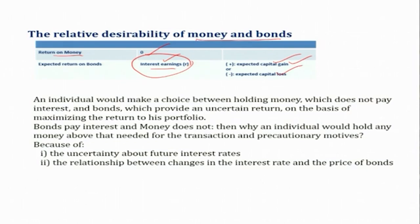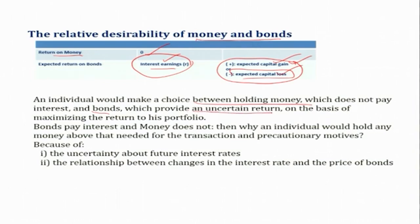In contrast, if the rate of interest increases in the future, there will be a decline in bond price and consequently a capital loss. So for bonds, there is interest earnings, but the interest rate itself is uncertain, and the expected return includes interest earnings plus either capital loss or capital gain, subject to fluctuations in the rate of interest. An individual would make a choice between holding money, which does not pay interest, and bonds, which provide an uncertain return, on the basis of maximizing return to his portfolio.